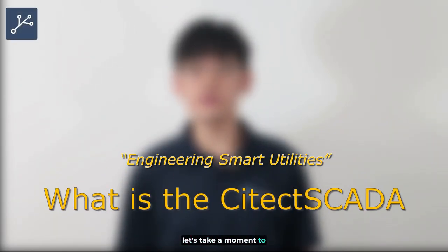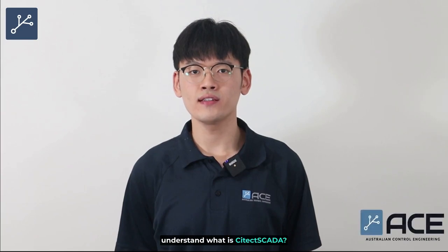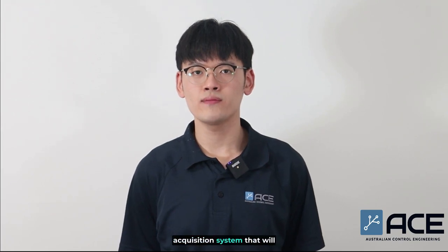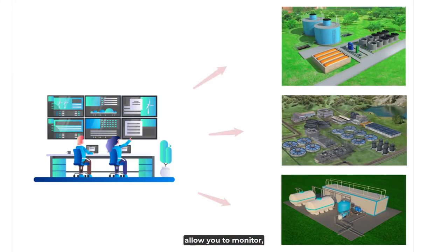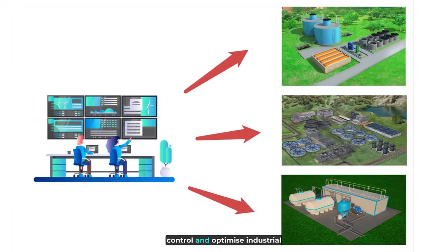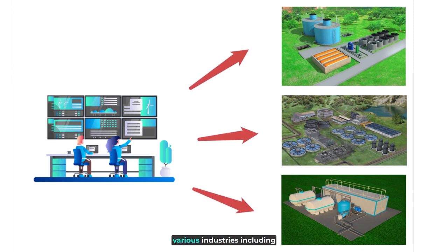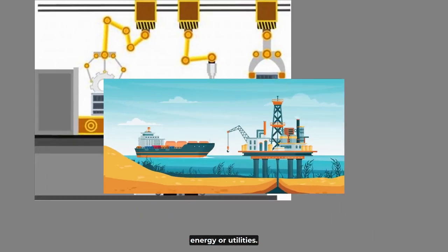Before we delve into remote alerting, let's take a moment to understand what Citect SCADA is. Citect SCADA is a powerful supervisory control and data acquisition system that allows you to monitor, control, and optimize industrial processes. It is widely used across various industries including manufacturing, energy, and utilities.